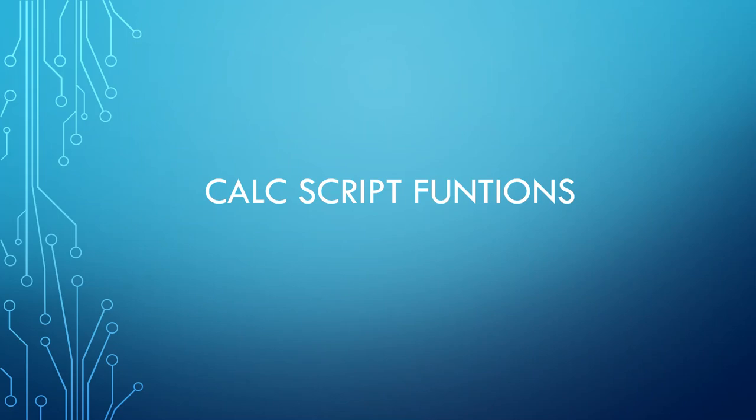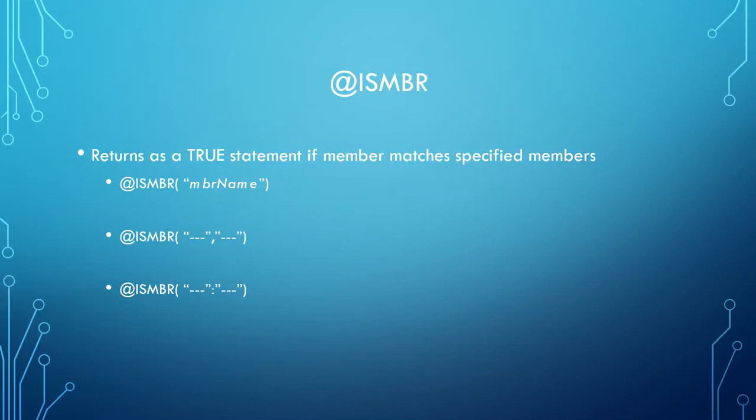Let's talk about common calc script functions. First is @ISMBR. What @ISMBR does is it returns as a true statement if member matches specified members. The syntax is @ISMBR and then you type in your member name. You can also use a comma delimited list which you type in your member name and then you use a comma and then you type in another member name. All these member names must be put inside of double quotes. You can also use a range which uses a semicolon.